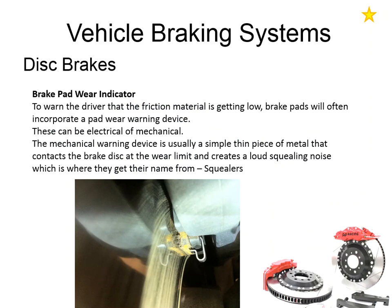Still on the subject of brake pads, we'll take a quick look at wear indicators. These fall into two main types: mechanical or electrical. For the mechanical type, you can see in the picture a piece of metal bent around alongside the brake pad — that's our mechanical warning device. That thin piece of metal is away from the disc normally, but as the brake pad wears down to its limit, the metal comes in contact with the disc. As it does, it vibrates and creates a loud squealing noise, warning the driver that the brake pads have worn out and the car needs to go to a garage.